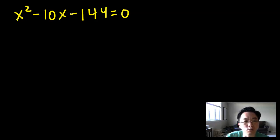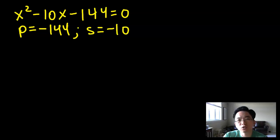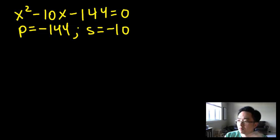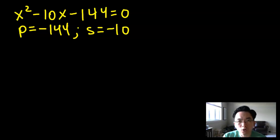Normally how we proceed is we'll go: okay, we need to think of two numbers whose product is equal to negative 144. And so here's where the guesswork comes in — you're thinking, okay, is it 12 and 12, then maybe 4 and 36, and you're just kind of playing around with these numbers. Well, with the quadratic method, you don't actually need to guess and test.